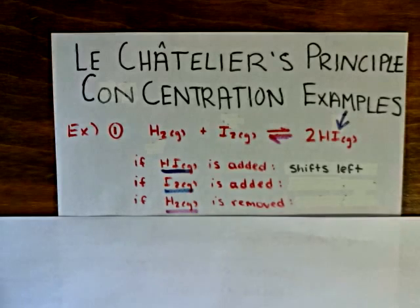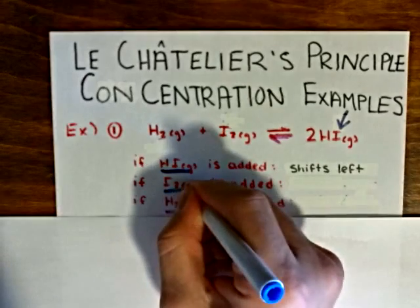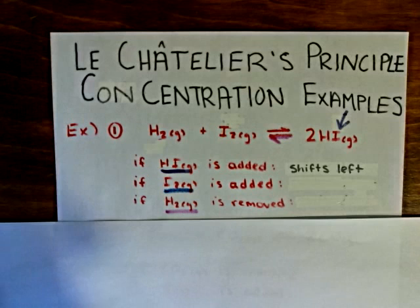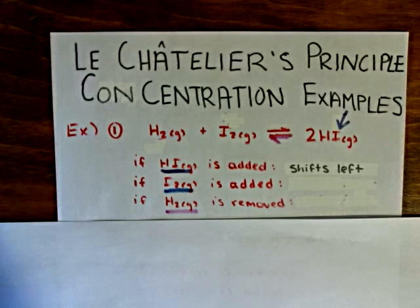Now, let's say more iodine gas is added. How will that shift the equilibrium? Well, again, if we add more iodine, it means that we have an excess of it.